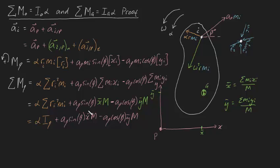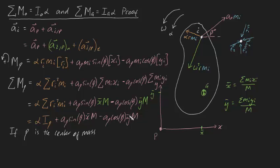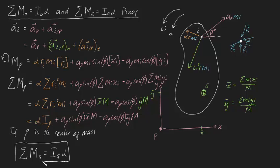Rest assured — by choosing what point P could be, we can recover the simpler formulas. Let's consider what happens if point P is the center of mass G. If P equals G, then x̄ and ȳ must both equal zero, because the distance from the center of mass to itself is zero. That means those extra terms drop out entirely, and the sum of moments about G simplifies beautifully to ΣMG = IG·α. That's one of the beautiful formulas we wanted to prove.